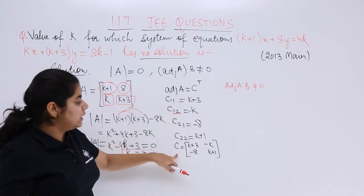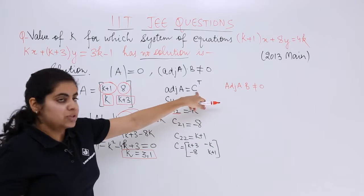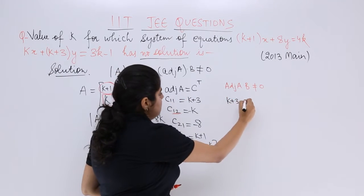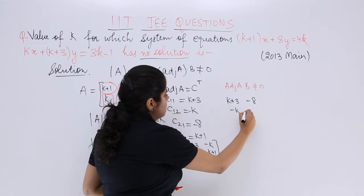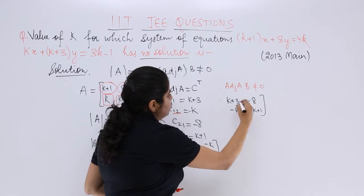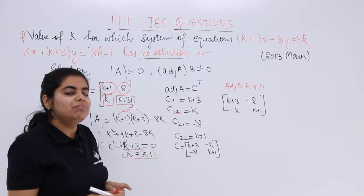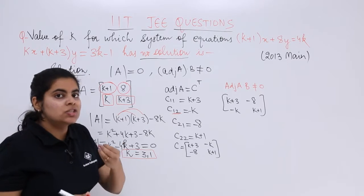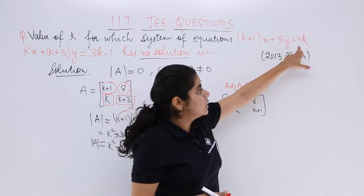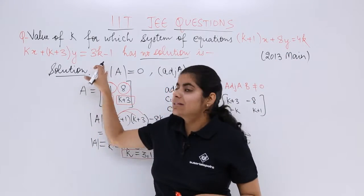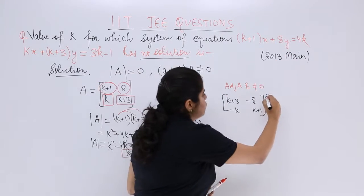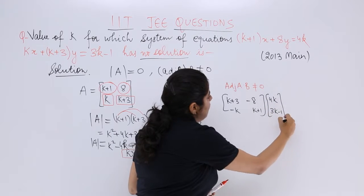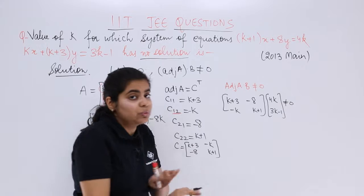What is adjoint A? It's cofactors transpose: k+3, -8, -k, k+1. What is B? B is the constant matrix. The constants are 4k and 3k-1. So we have 4k and 3k-1. This whole thing should not equal 0.